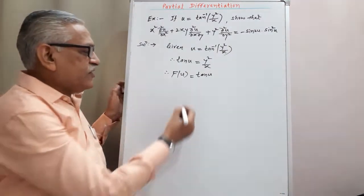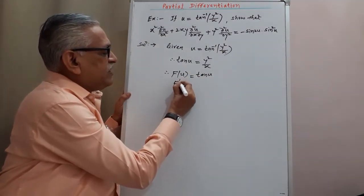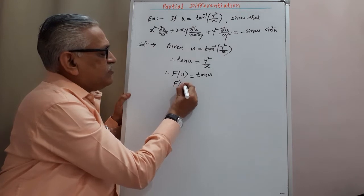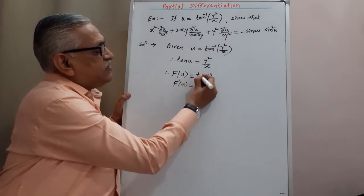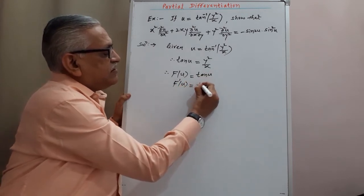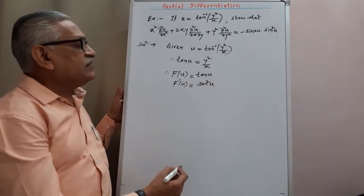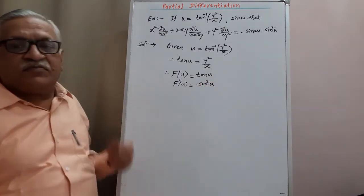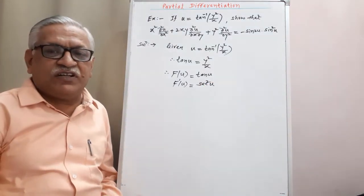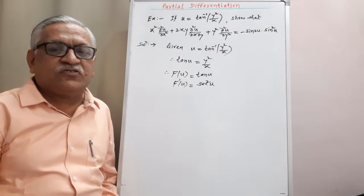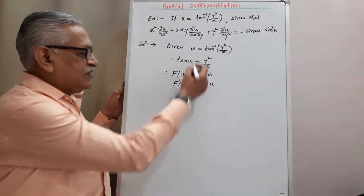Then, differentiating it with respect to u, we get f'(u) as the derivative of tan, which is sec²(u). Then to apply Euler's theorem, we require to obtain the degree of that homogeneous function.